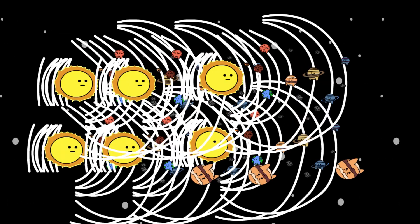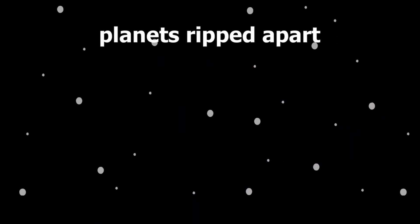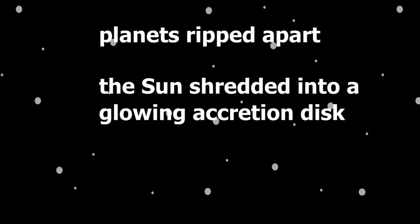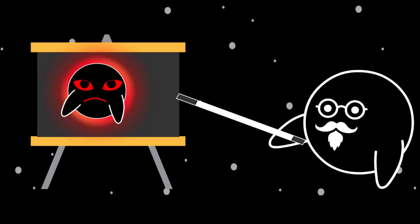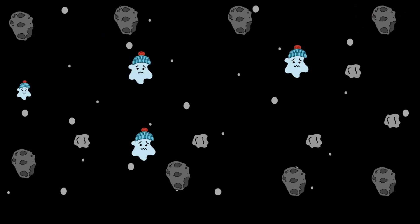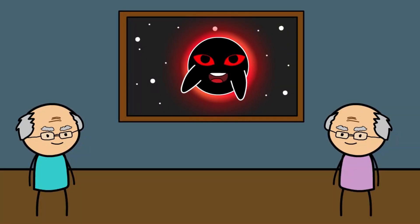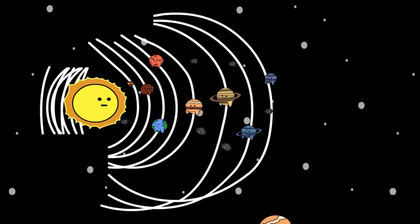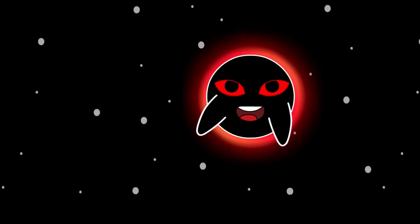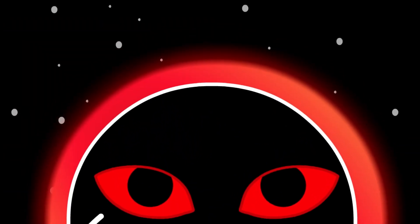If the black hole was small—say, 10 solar masses—it would tear through our system in minutes. Planets ripped apart. The sun shredded into a glowing accretion disk. If it was supermassive, the process would be slower but just as fatal. The gravitational balance that keeps everything in orbit would collapse. Worlds would crash into one another. The asteroid belt would rain down destruction. And soon, the entire solar system would be nothing but dust and radiation spiraling into the void. The black hole wouldn't even notice. It would just grow a little fatter, a little darker.